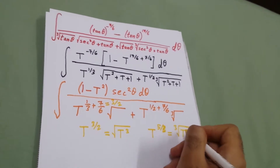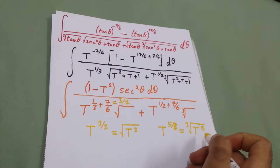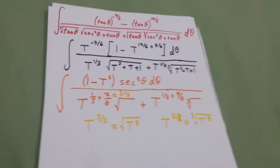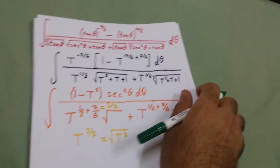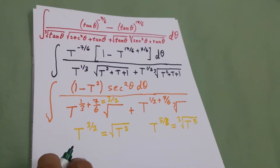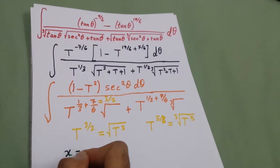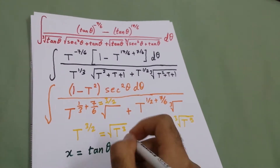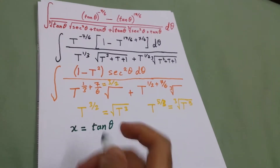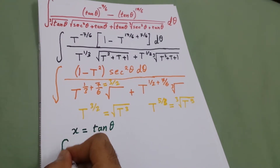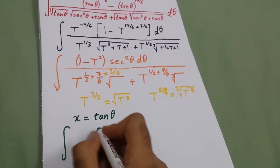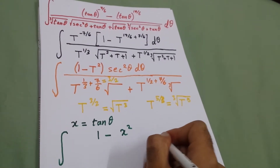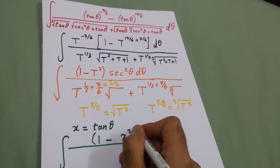Here it will be t to the power 10 over 6, which is t to the power 5 over 3, which can be written as the cube root of t to the power 5. We will multiply it inside the cube root by t to the power 5. Now we do the substitution: x equals tan theta, so dx equals secant squared dtheta, and the integral will be 1 minus x squared dx.